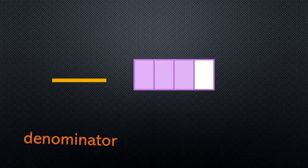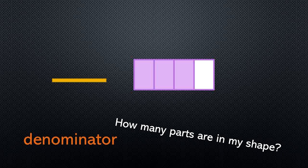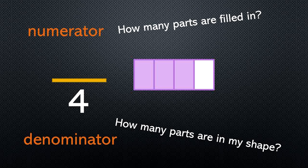Here's one more shape to look at. This one is a long rectangle. How many parts do you count total? How many parts are now filled in? Our denominator — how many parts are in my shape — goes on the bottom. How many is that? Four. The numerator — how many parts are filled in — goes on the top. Can you count how many are filled in? Three. The way we read this fraction is three-fourths. There are three parts filled in and there are four total parts. Three of the fourths are filled in.